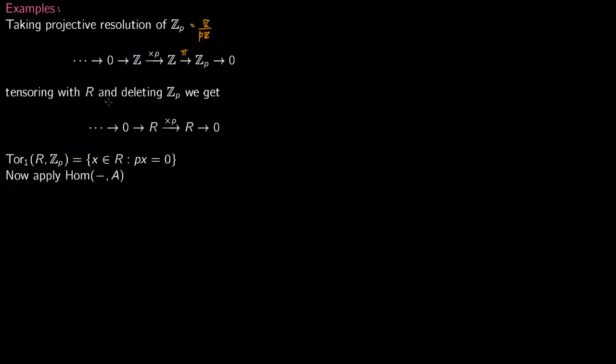So now you tensor it with R and you delete this term. So R tensor with integers, you just get R, and then you have deleted this term out, so you get R times P, R to 0.